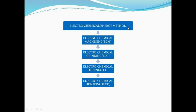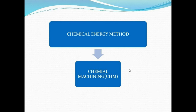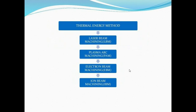The third is electrochemical energy methods, which includes: electrochemical machining (ECM), electrochemical grinding (ECG), electrochemical honing (ECH), and electrochemical deburring. The fourth is chemical energy methods, where only chemical energy and chemicals are used for machining. The fifth is thermal energy methods, which includes four processes: laser beam machining, plasma arc machining, electron beam machining, and ion beam machining.